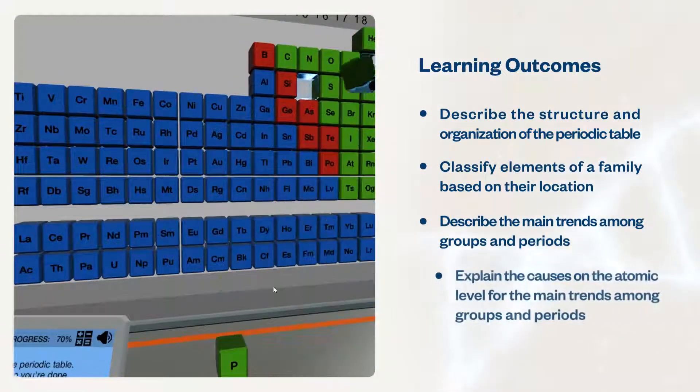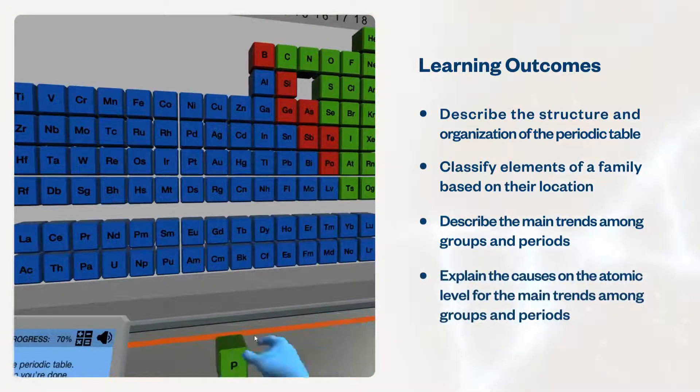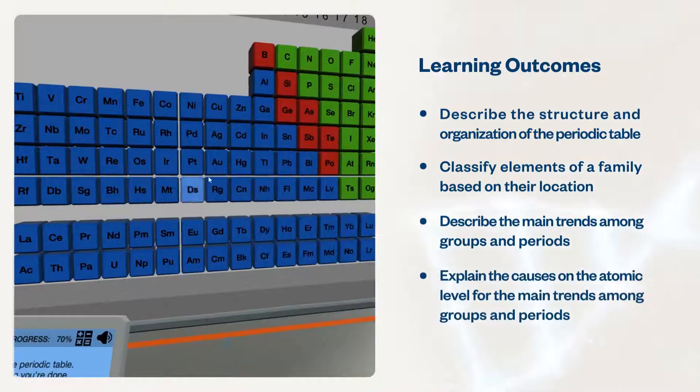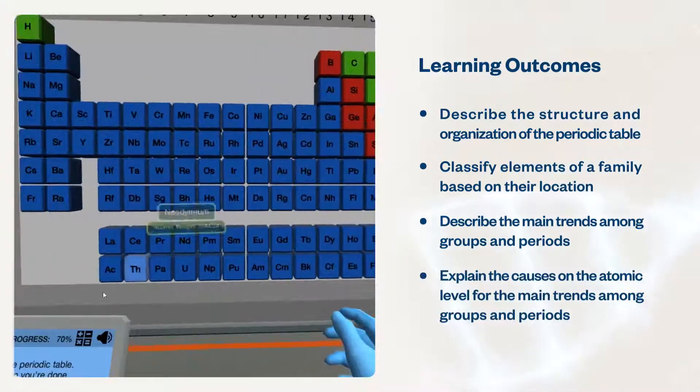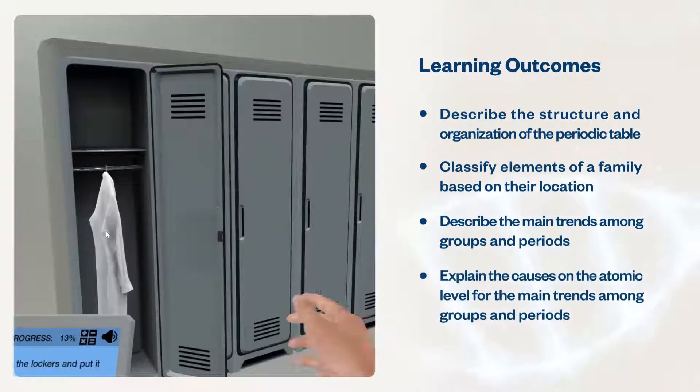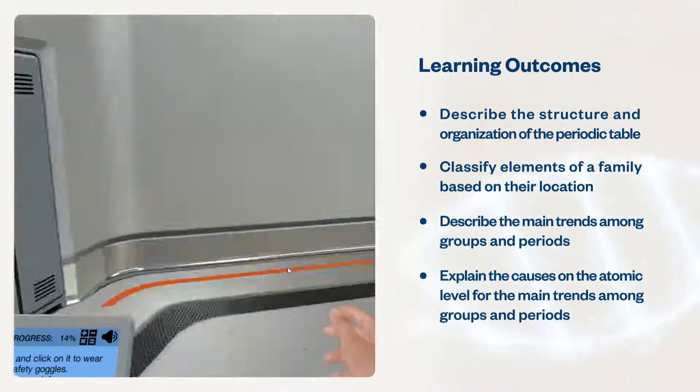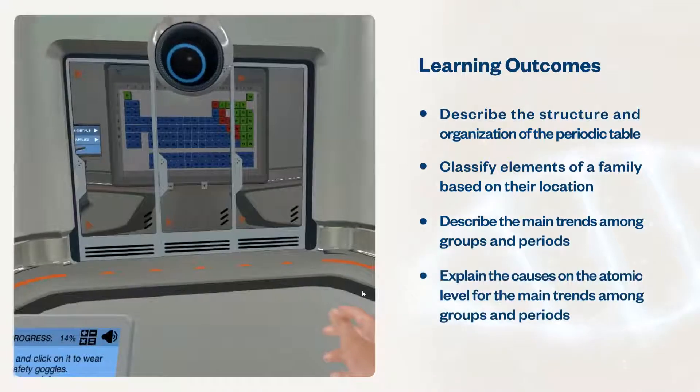They will also explain the causes on the atomic level for the main trends among groups and periods concerning atomic radii, ionization energy, and electronegativity.